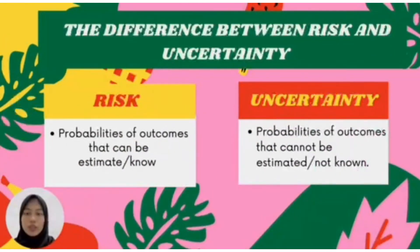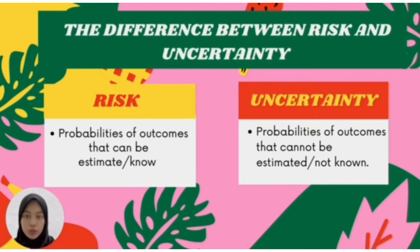We proceed to the difference between risk and uncertainty. For risk, it is the probability of an outcome that can be estimated or known. For uncertainty, it is the probability of an outcome that cannot be estimated or is not known.